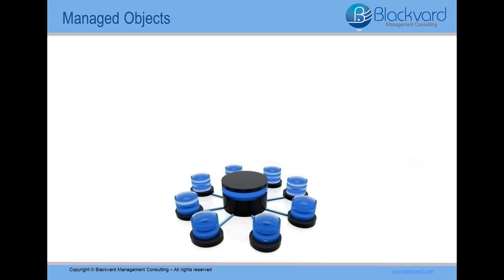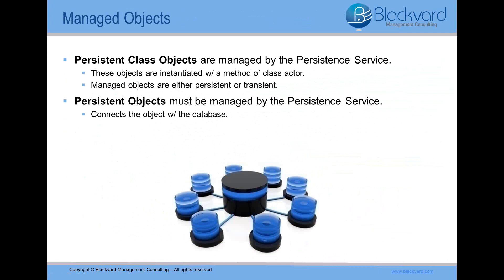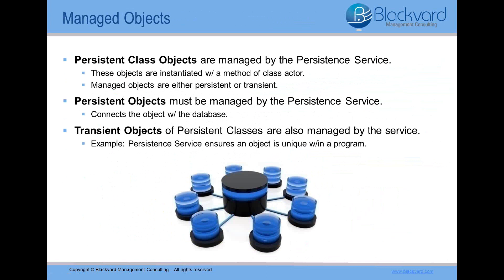So now let's discuss managed objects. The objects of persistent classes are also managed by the persistent service. This means, among other things, that these objects are instantiated with a method of the class actor and not with the create object statement. These objects are known as managed objects. Please note that objects managed by the persistent service can either be persistent or transient. Persistent objects must be managed by the persistent service, and the service connects the object with the database. Transient objects of persistent classes are also managed by the persistent service — for example, the persistent service ensures that the object is unique within a program by verifying all of its key attributes.